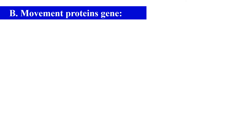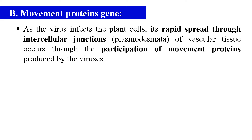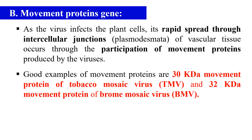The second type of gene we can transfer to plants is the movement protein gene. Movement proteins are those proteins which help the virus to move from one cell to another cell. As the virus infects the plant, it spreads itself and moves through the intracellular junction that is plasmodesmata. Examples of these movement proteins include the 30 kilodalton movement protein of TMV (tobacco mosaic virus) and the 32 kilodalton movement protein of BMV (brome mosaic virus).